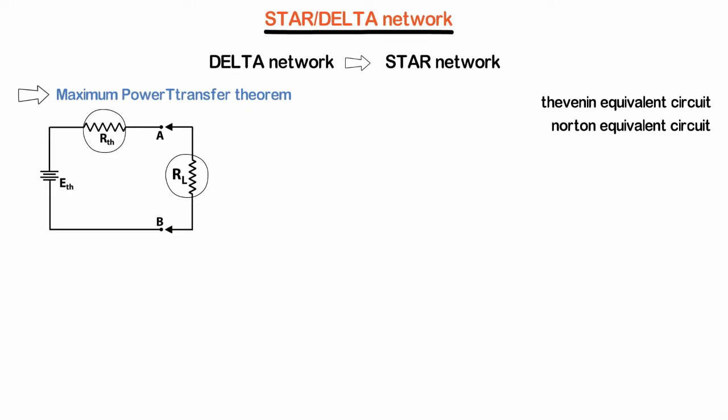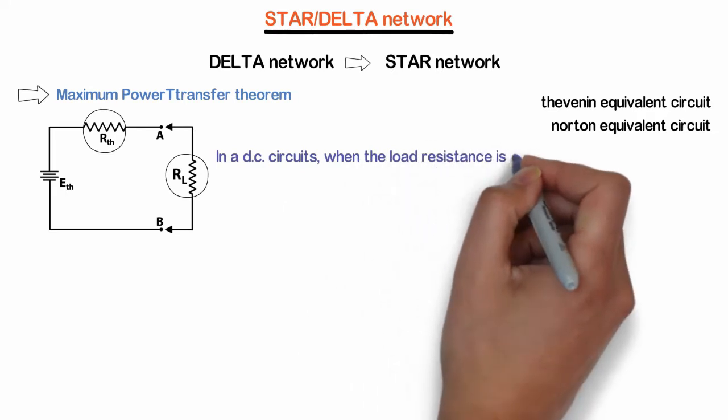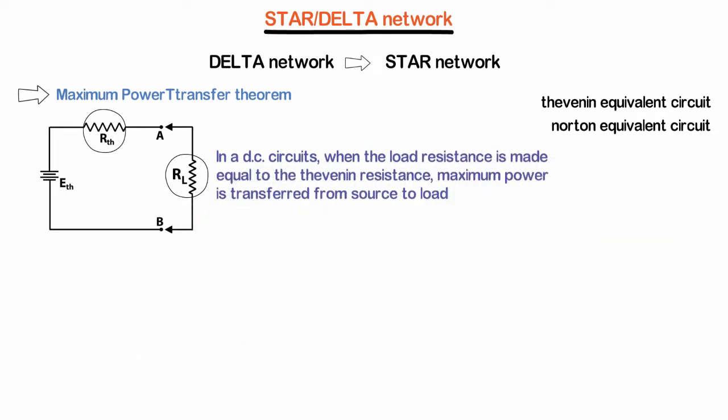According to the maximum power transfer theorem, in DC circuits when the load resistance is made equal to the Thevenin resistance, maximum power is transferred from source to load.